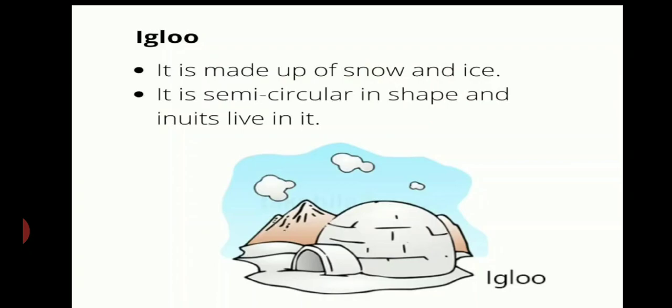Igloo. It is made up of snow and ice. Inuits live in igloo. It is semi-circular in shape.